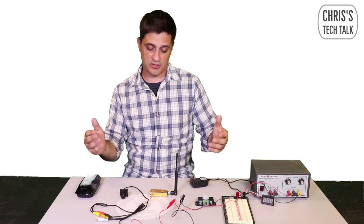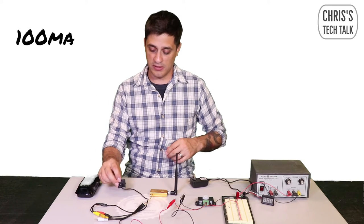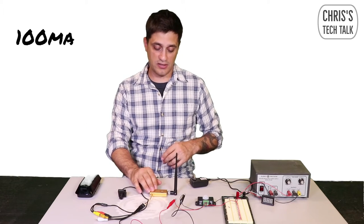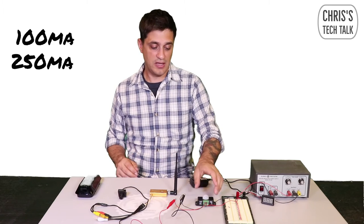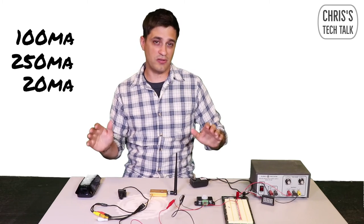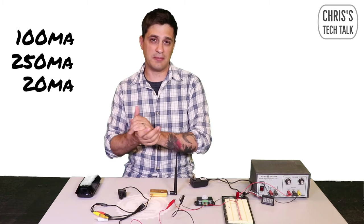For this particular setup, this camera is 100 milliamp draw, the transmitter is 250 milliamp draw, and the relay is somewhere around a 20 milliamp draw.